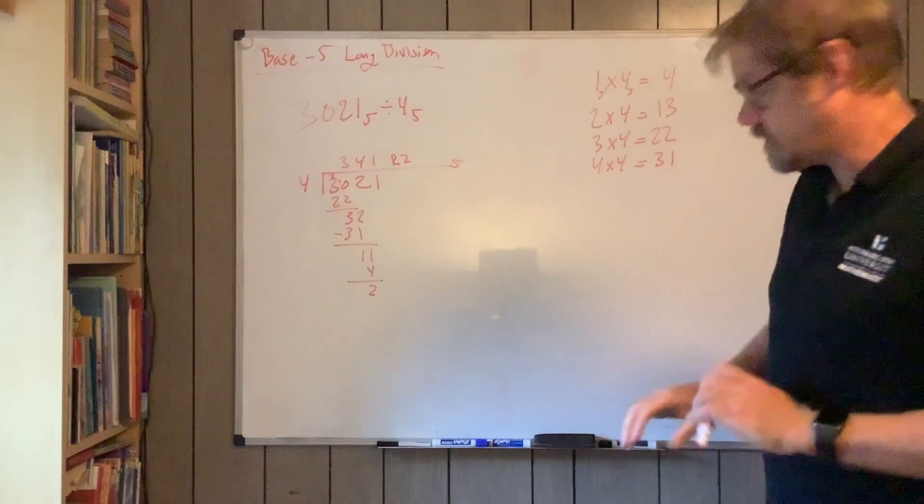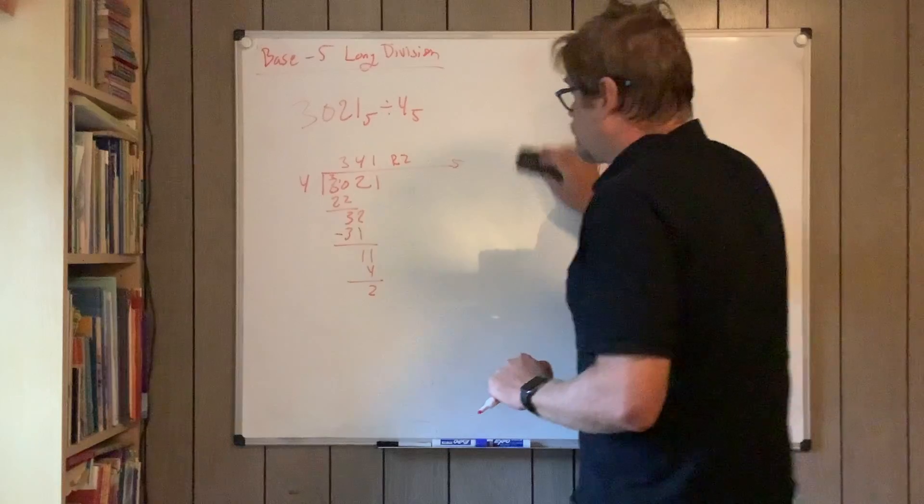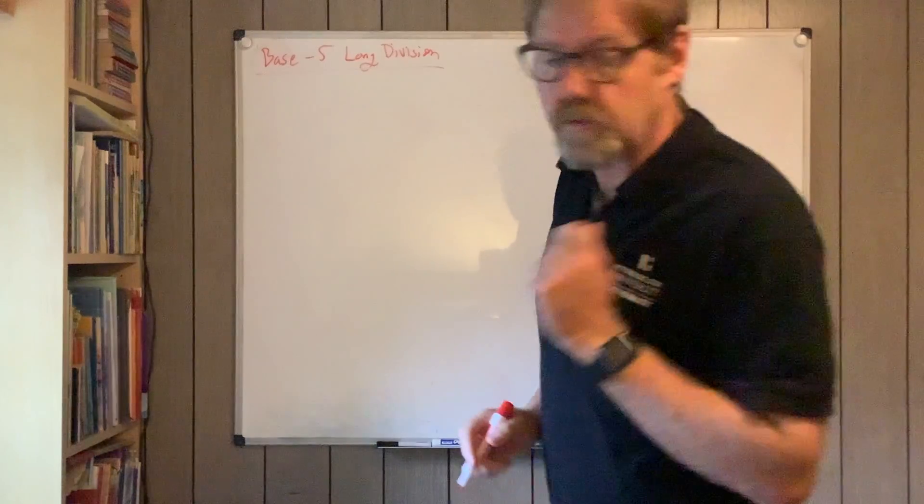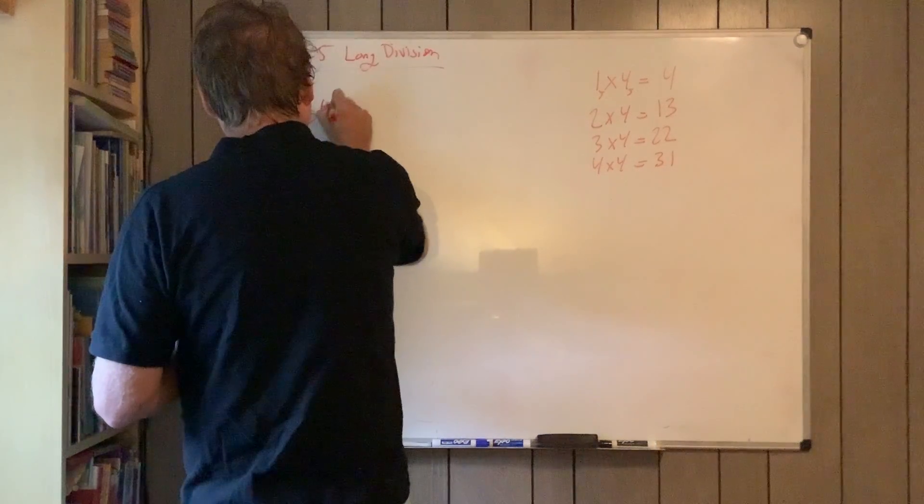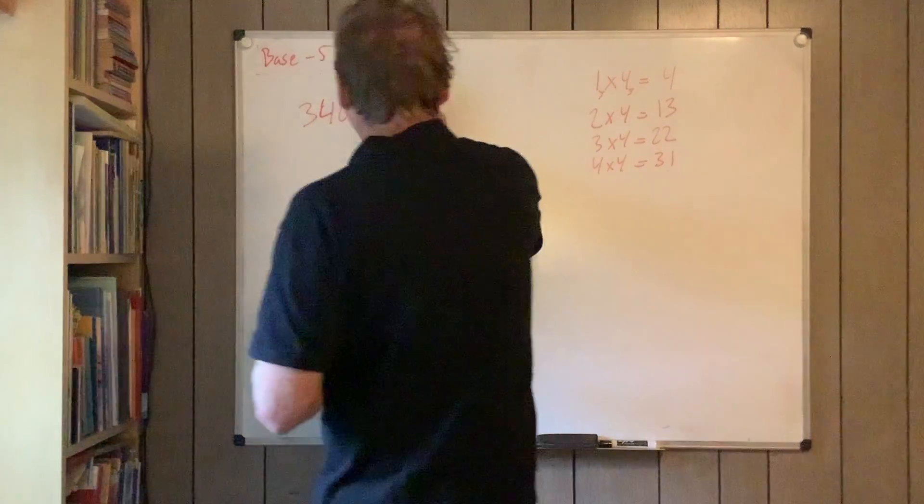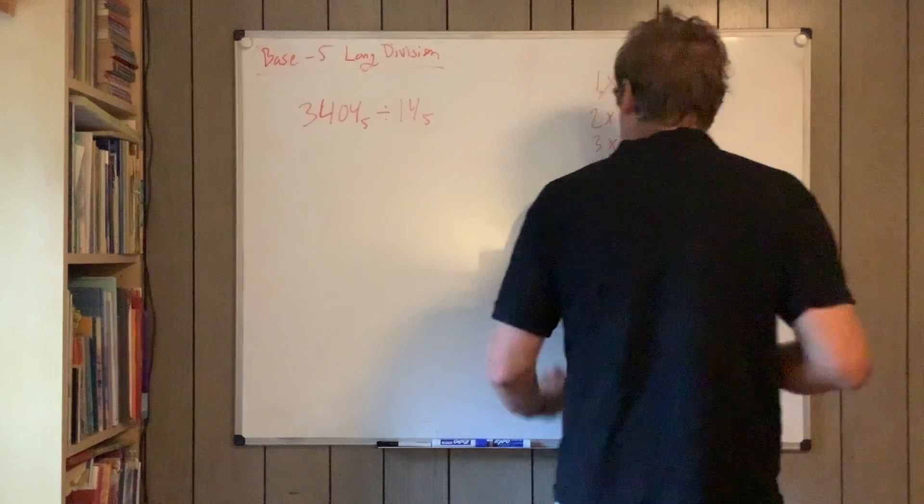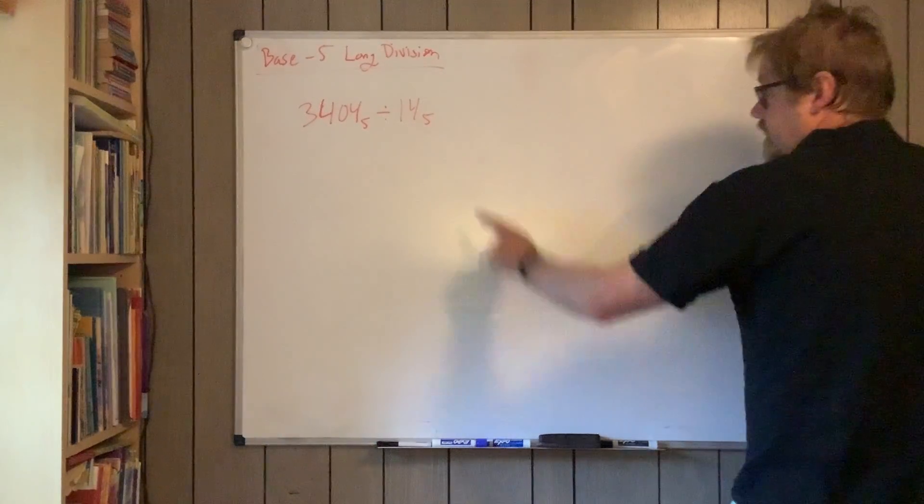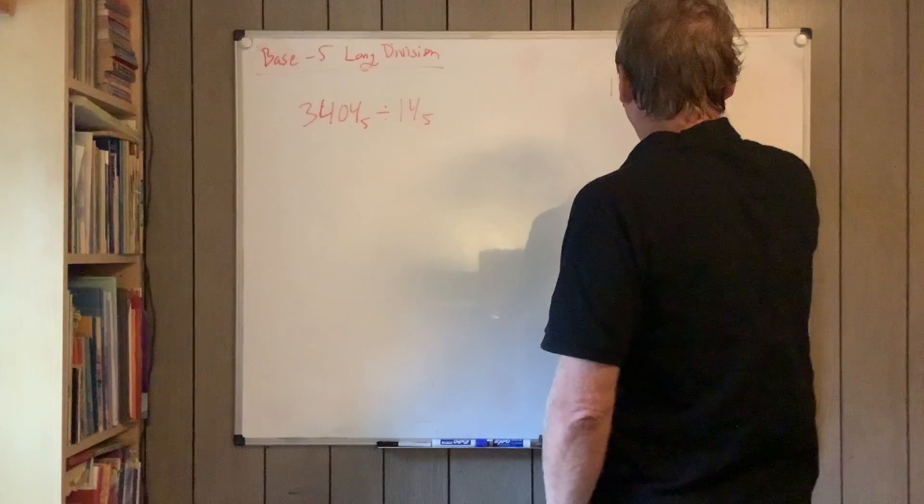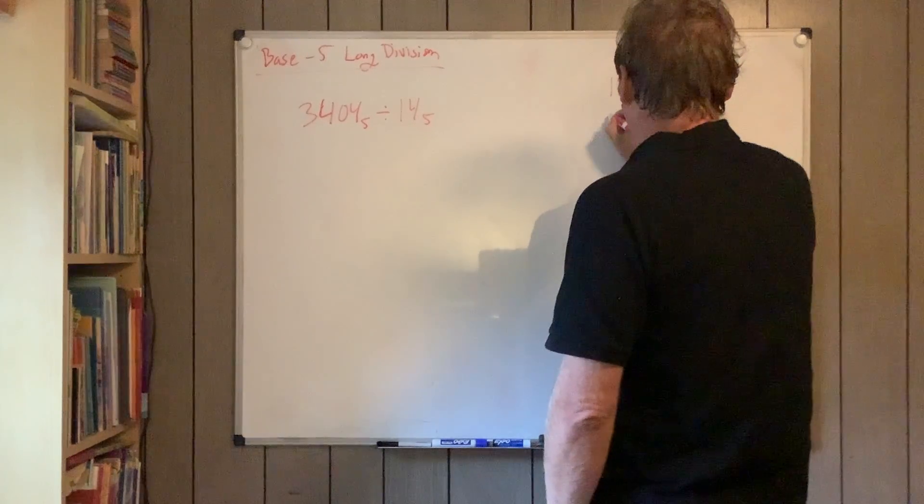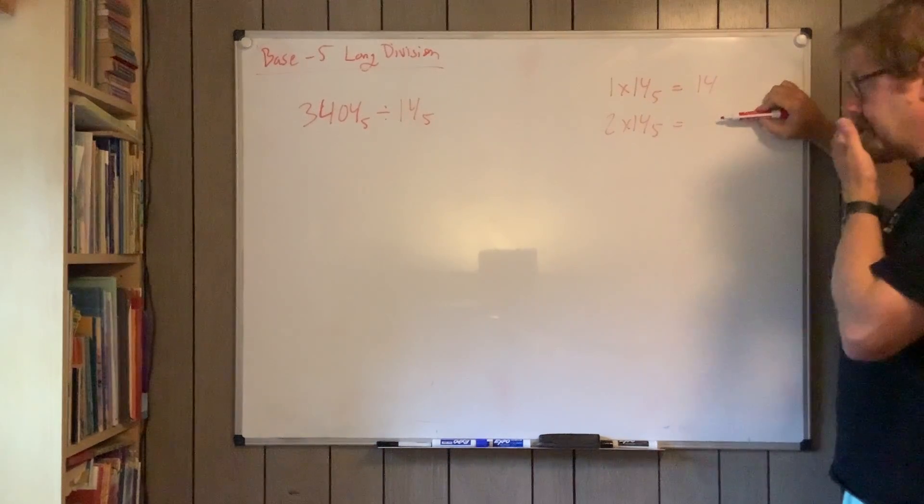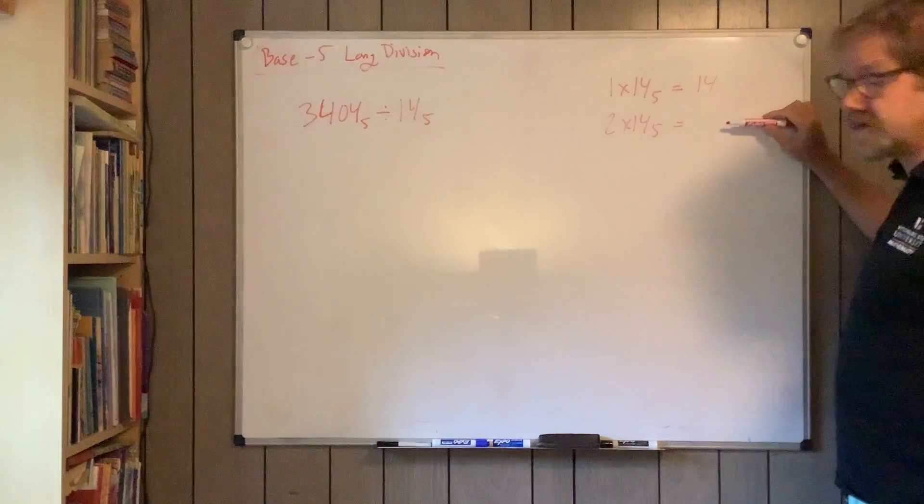Now I'm going to do a couple more examples with two digit divisor in base 5. 3404 base 5 divided by 14. I'm going to do the same thing here that we have before. 1 times 14 base 5 is 14. 2 times 14 base 5 - I'm going to skip count.